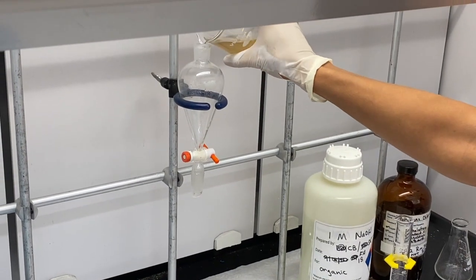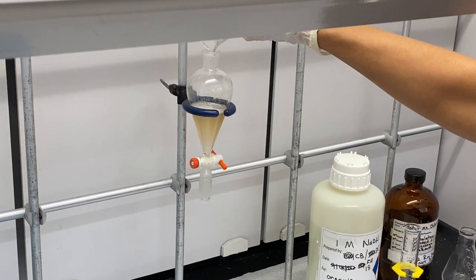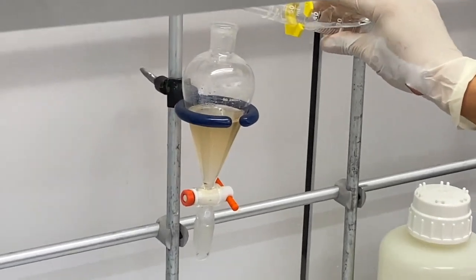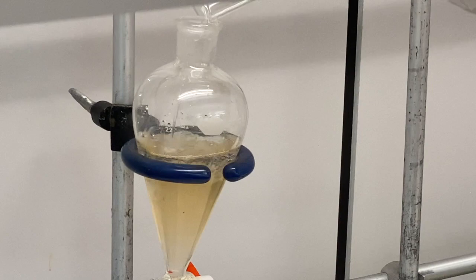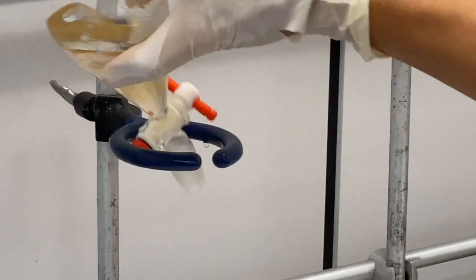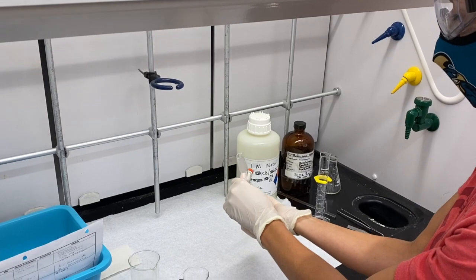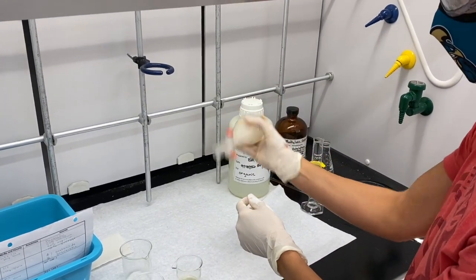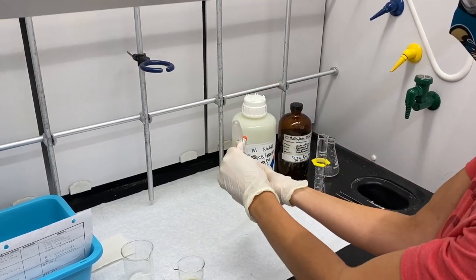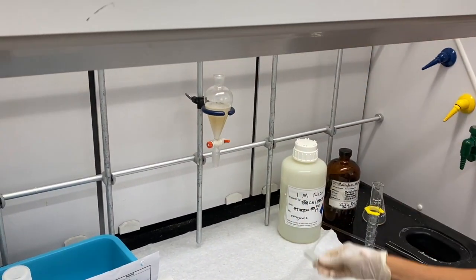I'm going to pour this back in here, and I want to re-extract my organic layer with another 25 milliliters of sodium hydroxide. Pour this in here, and you see again we get that layer. I want to do my extraction again. Take out the stopper and let those layers separate.